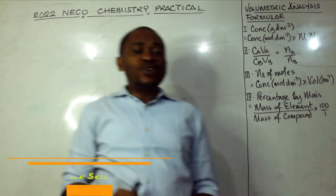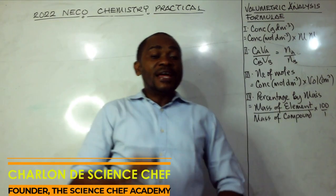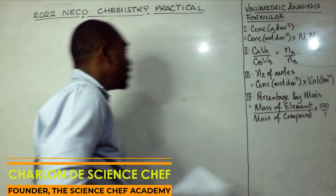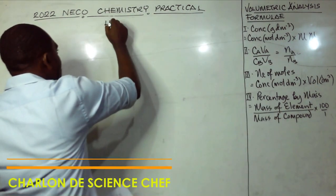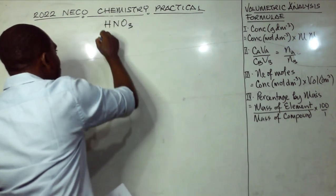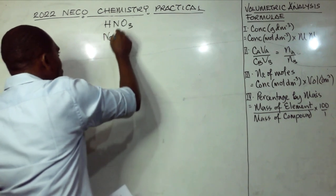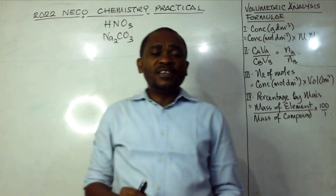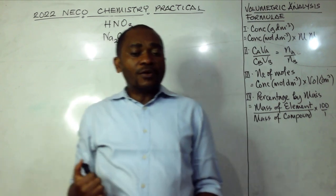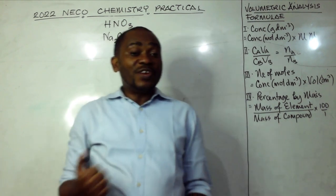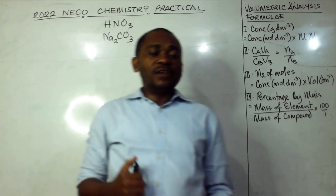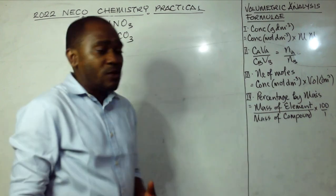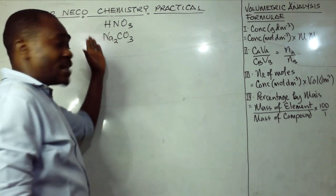The volumetric analysis for this year's NECO chemistry practical is on HNO3, that's trioxonitric acid, and sodium trioxocarbonate, which means that it is an acid-base titration, unlike what we did in the previous year which was a redox titration. We'll be looking at the likely questions that students can encounter based on this titration.